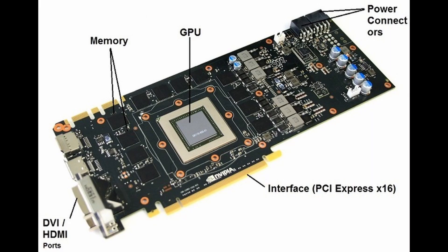With that out of the way, how do graphics cards work? The graphics card is almost like a small computer inside of your computer. It has a processor, a motherboard, and RAM like a normal computer. However, all these components are just used to create graphics.